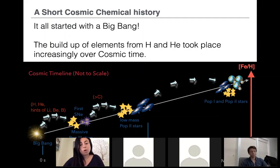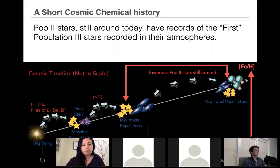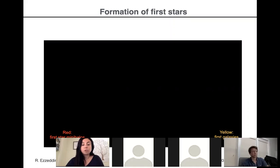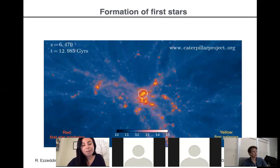From that first metal production, the second generation — what we call population II stars — must have formed. These population II stars are believed to be low mass, and some of them must have survived until the present day. This is the whole premise of stellar archaeology: we are basically the Indiana Jones of the galaxy, trying to find very old low-mass stars and use them to project back and understand the early universe. To understand the first stars, people use cosmological simulations from dark matter mini halos that collapse to form the first stars.